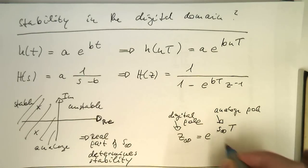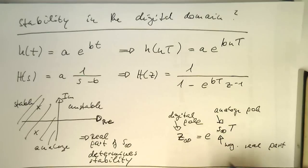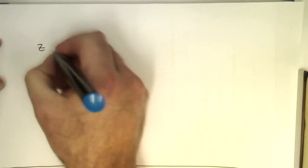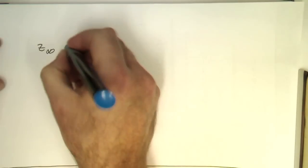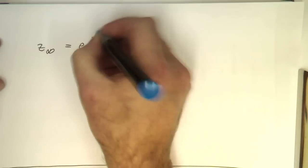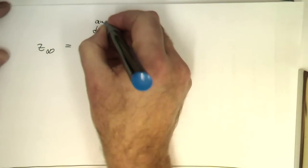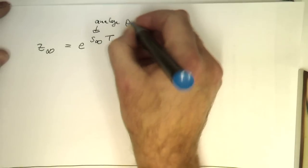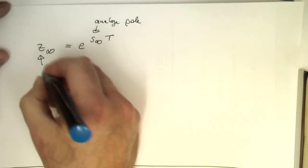Now here, when the real part is negative, it's stable. So what does it mean in terms of this translation here? Negative real part means stable. Let's just redraw this here a bit larger. z infinity was e to s infinity T. This was our analog pole and this was the digital one.